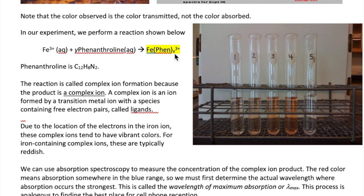Our interest is in determining what the value of Y is, which is how many phenanthrolines are bound to the iron. A complex ion has vibrant colors due to the presence of the transition metal ion.